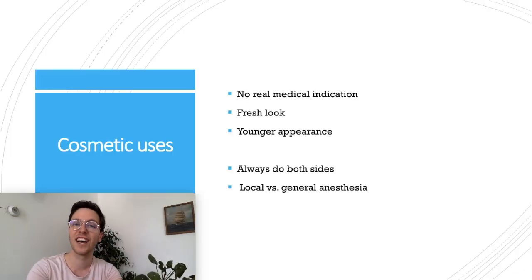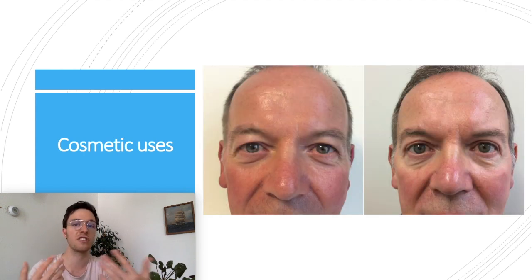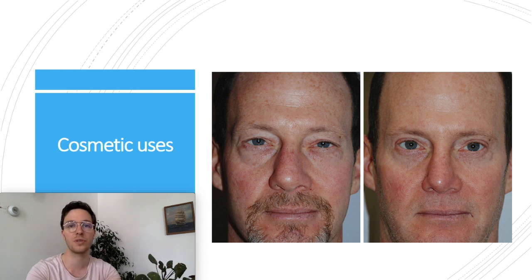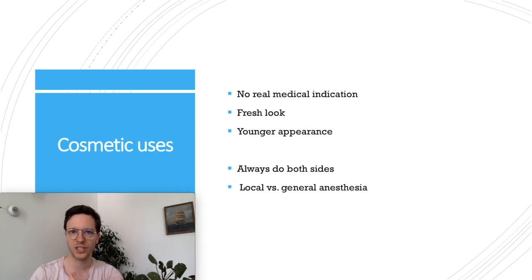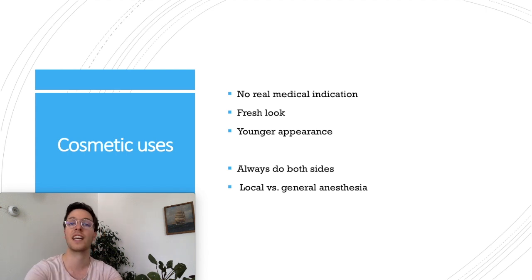For the cosmetic uses, there's no real medical indication to perform the surgery, so those people mostly have no complaints — they're just looking for a fresher look or younger appearance. Therefore, especially in cosmetic cases, it's recommended to perform the surgery on both upper eyelids to minimize any asymmetrical effect. Also, when choosing between local or general anesthesia, local anesthesia has a preference as it's not only cheaper but also safer and quicker.